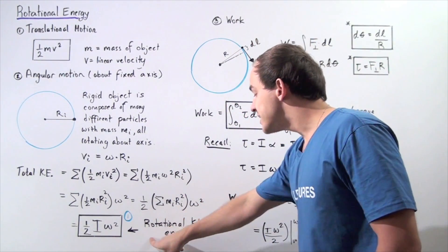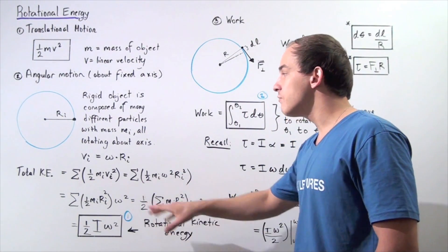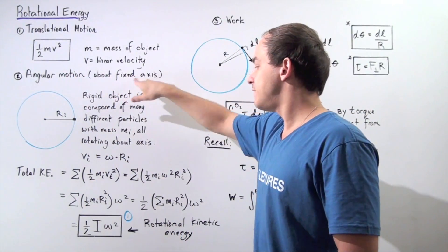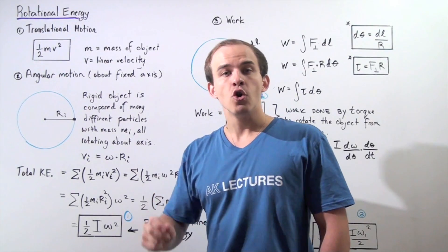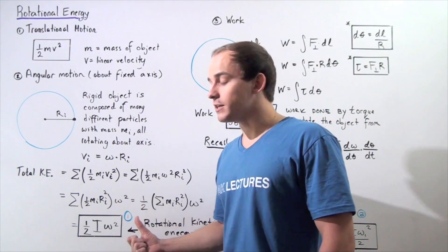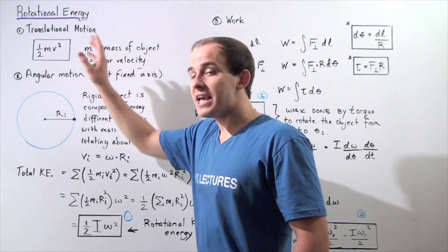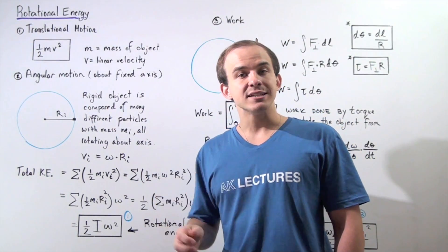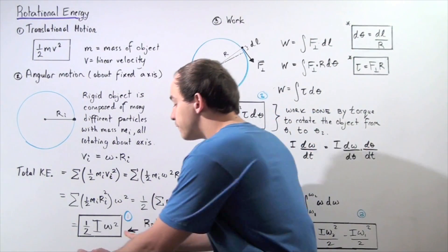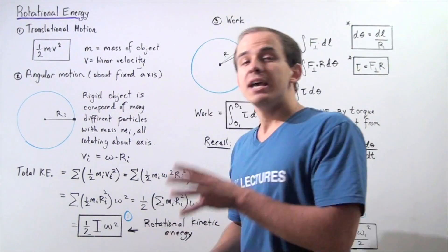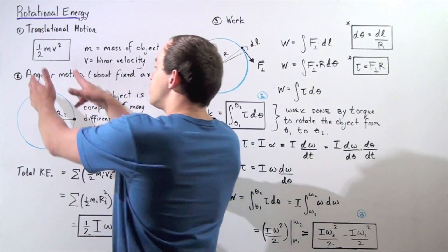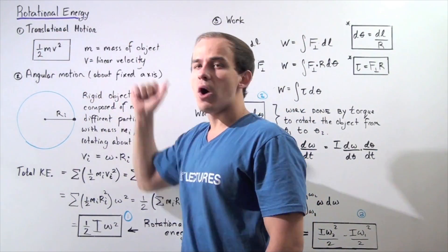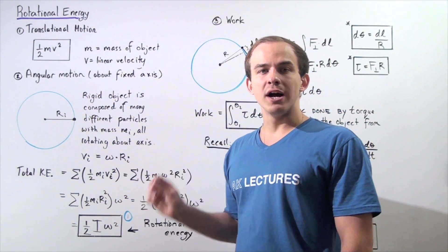So the rotational kinetic energy of an object experiencing angular motion about a fixed axis is equal to one-half I omega squared, where I is the rotational inertia of the object and omega is its angular velocity. We see that the form of this equation is almost identical to the translational case, except we replace the translational physical quantities with the angular physical quantities.